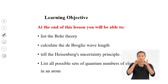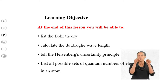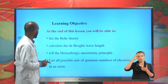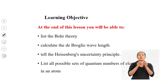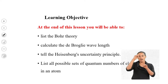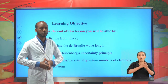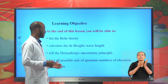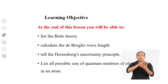At the end of this lesson, you will be able to list the Bohr theory, calculate the de Broglie wavelengths, state the Heisenberg's Uncertainty Principle, and list all possible sets of quantum numbers of electrons in an atom.